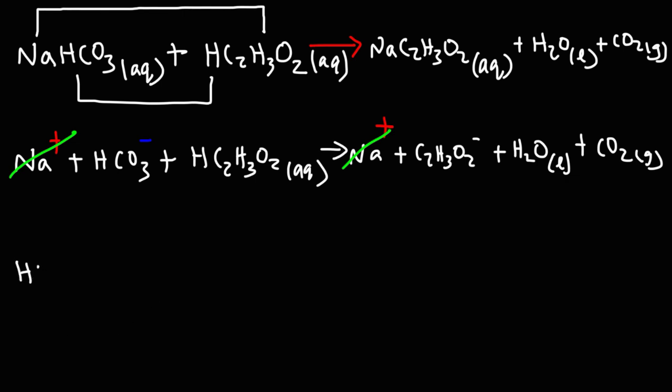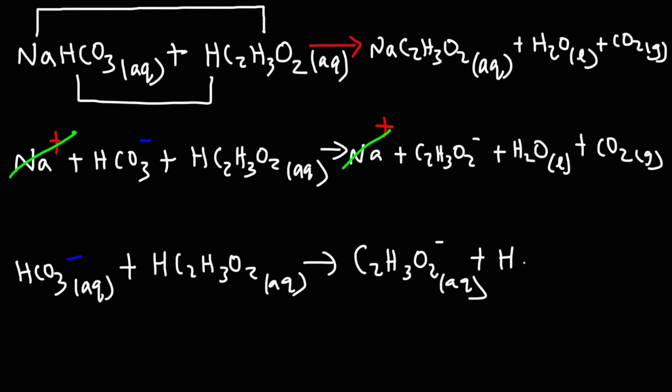So what remains will be part of the net ionic equation. So we have bicarbonate reacting with acetic acid to produce acetate, liquid water, and carbon dioxide.